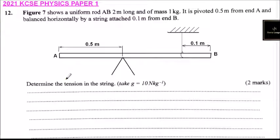Question number 12. Figure 7 shows a uniform rod AB 2 meters long and of mass 1 kg. It is pivoted at 0.5 meters from end A and balanced horizontally by a string attached 0.1 meters from end B.